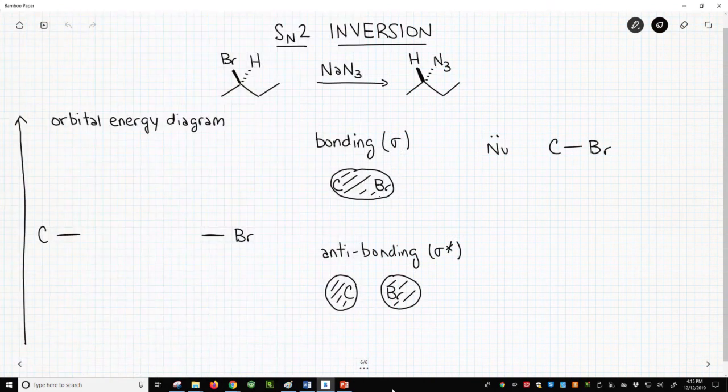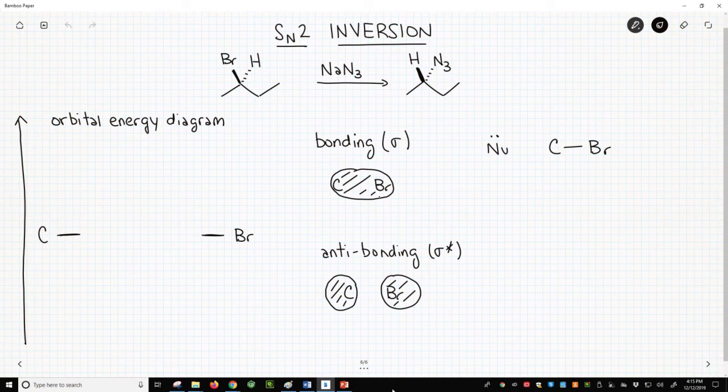Across the top of the screen, we have a typical SN2 reaction. Our nucleophile over the arrow is sodium azide. The starting material is a single enantiomer of a secondary halide, 2-bromobutane. The product is 2-azidobutane and reflects inversion of stereochemistry.